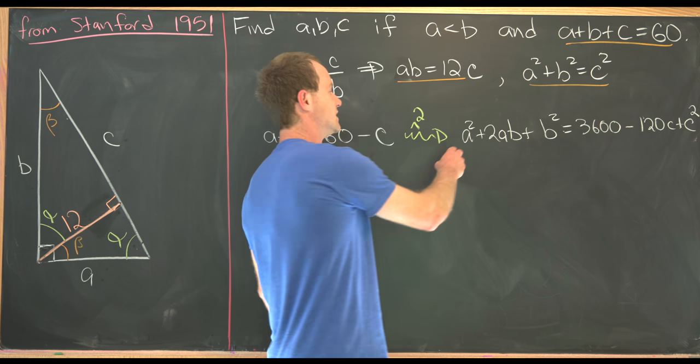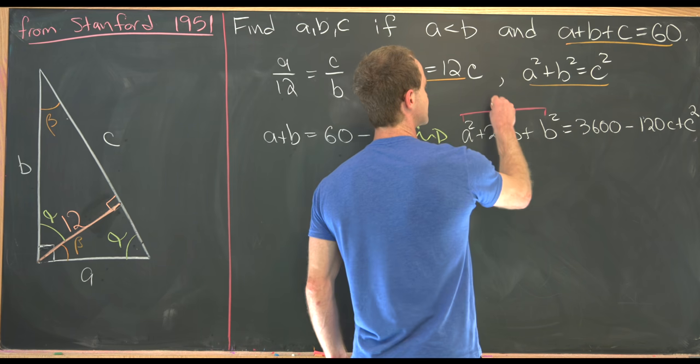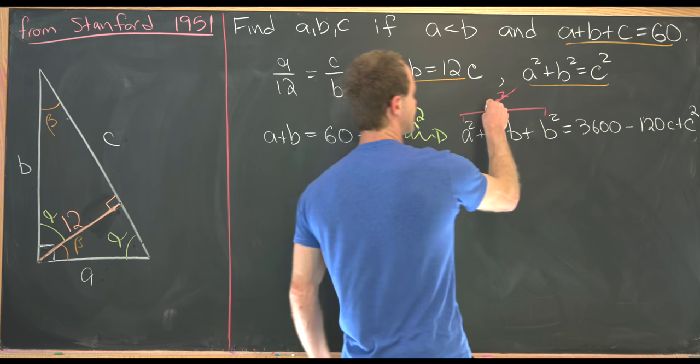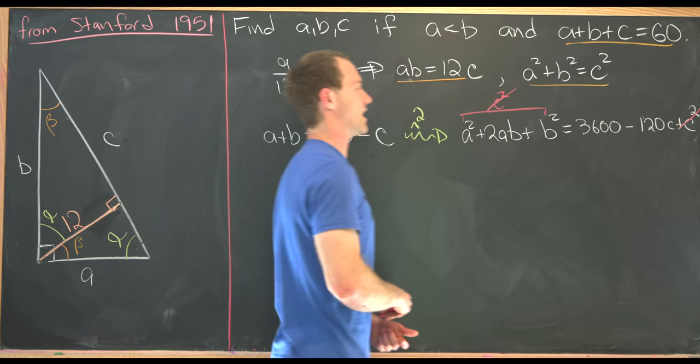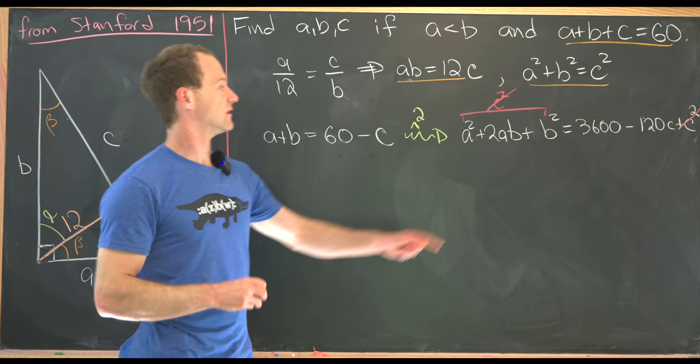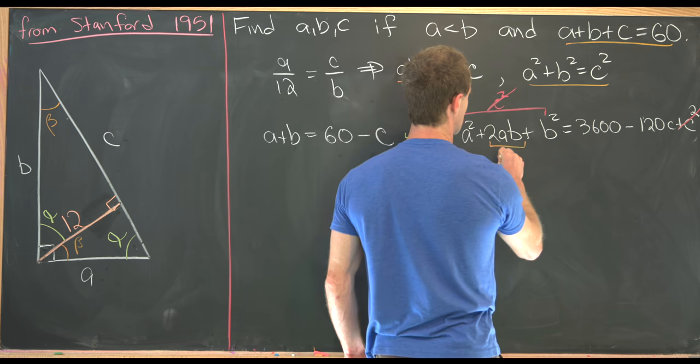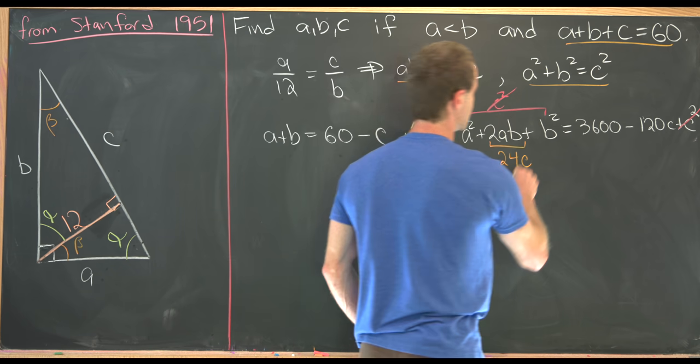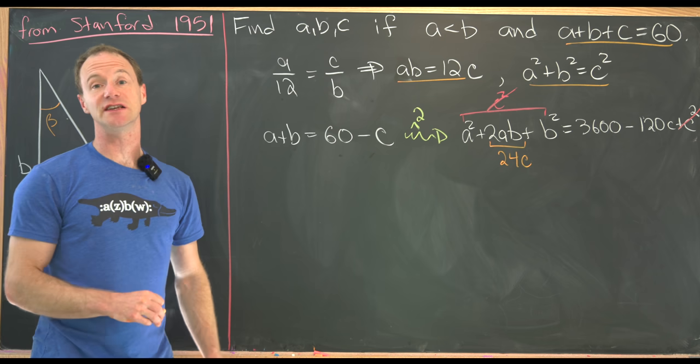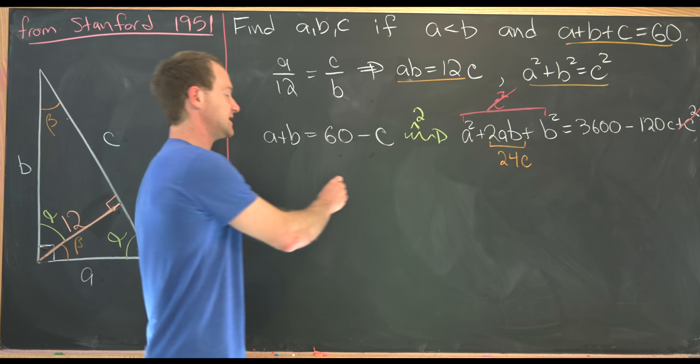But now we can start simplifying. So notice that A squared plus B squared is equal to C squared, which we can use to cancel the C squared on the other side of the equation. And then furthermore, 2 times AB is going to be 2 times 12C or 24C. So now we've got a nice equation that we can use to solve for C.